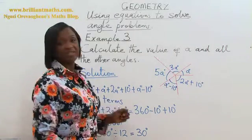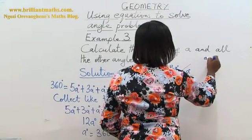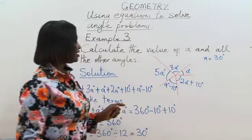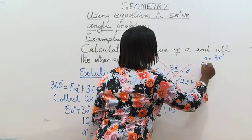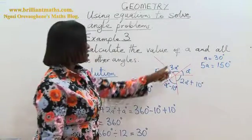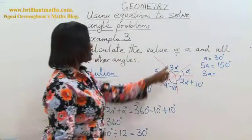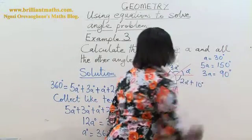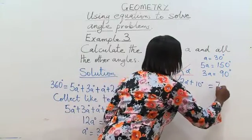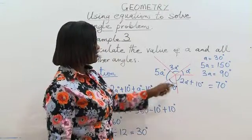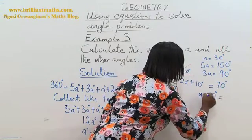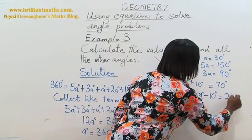So if we know that a is 30 degrees, let's find the value of the rest of the angles. So we have a is equal to 30 degrees. I'll start from 5a, like I said, and go clockwise. Therefore, 5a is equal to 30 times 5, which will give us 150 degrees. 3a will be equal to 30 degrees times 3, which will give us 90 degrees. 2a plus 10, 2a will be 60. 60 plus 10 is equal to 70 degrees. And finally, a minus 10. If a is 30, then a minus 10 degrees will give us 30 minus 10, which is equal to 20 degrees.